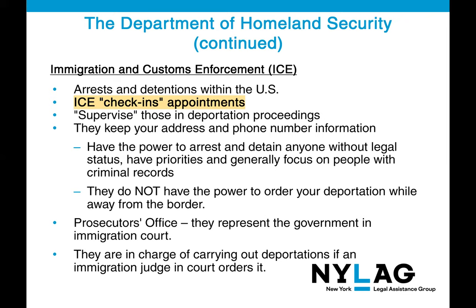The third agency is Immigration and Customs Enforcement, or ICE. They are in charge of conducting arrests and detentions within the United States. They also handle ICE check-in appointments and supervise those in deportation proceedings. ICE keeps your address and phone number information. They have the power to arrest and detain anyone without legal status, and generally focus on people with criminal records. ICE does not have the power to order your deportation while away from the border. ICE also acts as the prosecutor's office, representing the government in immigration court proceedings, and carries out deportation if an immigration judge orders it.